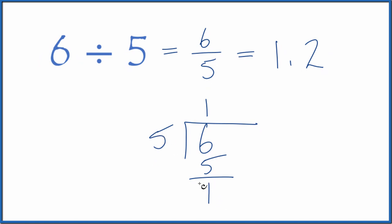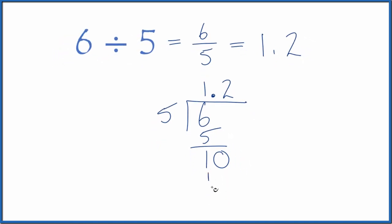5 doesn't go into 1. Let's call it 10, but then we do need to put a decimal point. Now, 2 times 5, that's 10. We subtract, no remainder.